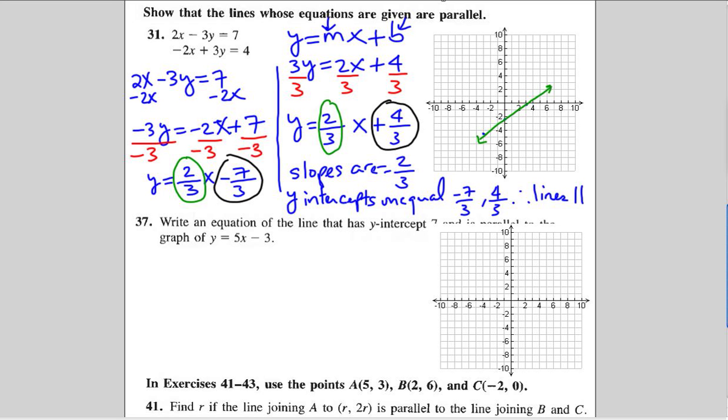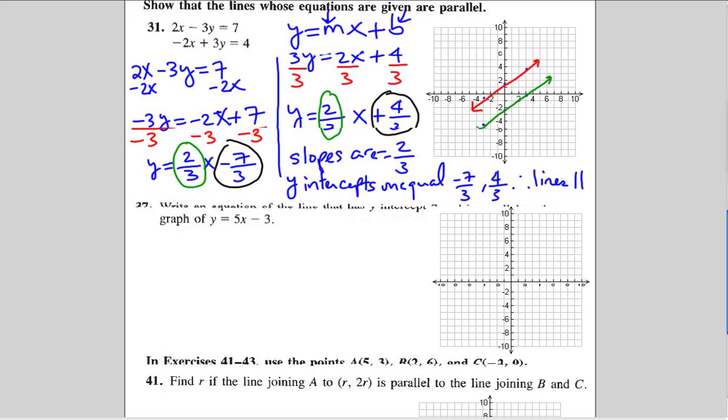So our first line looks like this. Now we're going to graph the second line. It has a y-intercept at 4 thirds. So that's 1 and 1 third, somewhere here. And it has a slope of 2 thirds. So we go up 2 and over 3. Or we go down 2 and over 3 to the left. And we graph that line. And the lines do look parallel. That was just a visual to show us what's going on.